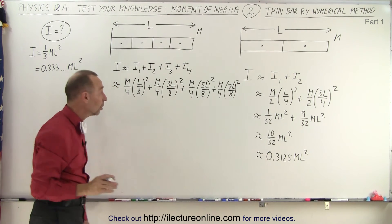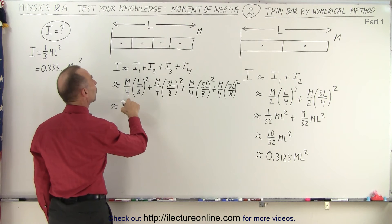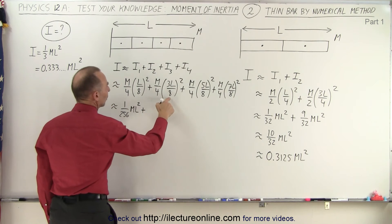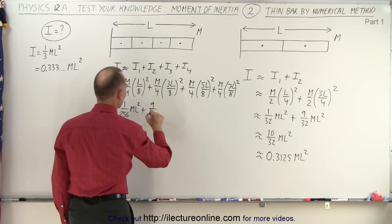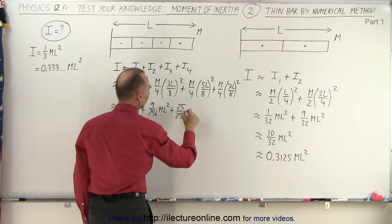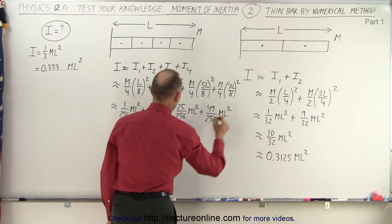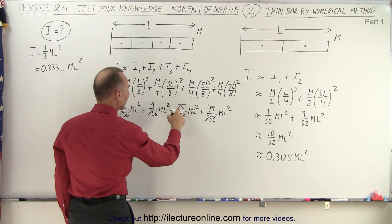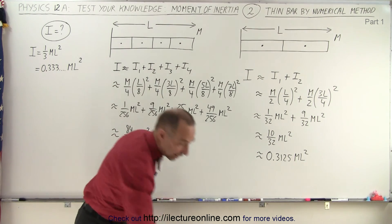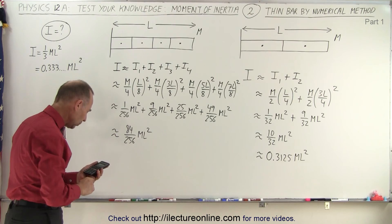Adding all those up: 1 over 256 ml squared, plus 9 over 256 ml squared, plus 25 over 256 ml squared, plus 49 over 256 ml squared. That totals 84 over 256 ml squared. With the calculator, 84 divided by 256 gives us 0.32813.